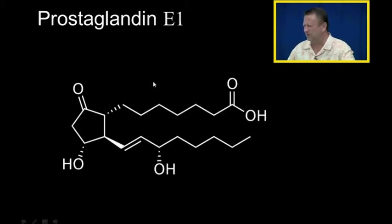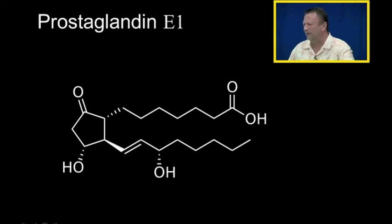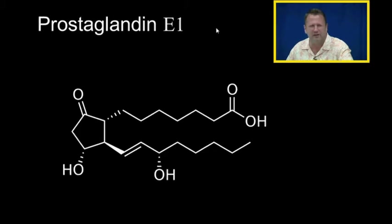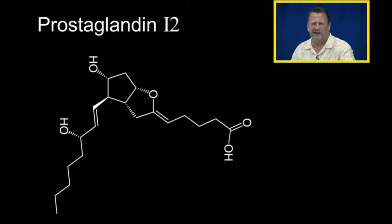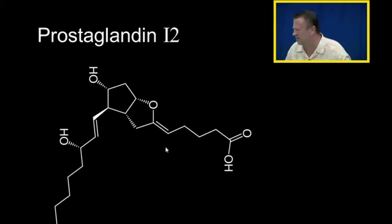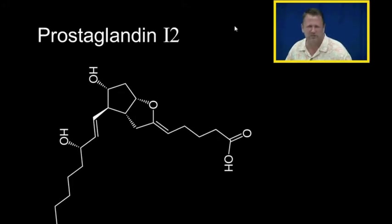Prostaglandin E1: the E indicates where the oxygens are on the ring, determining the letter designation. Notice it has one double bond, hence the number 1. Prostaglandin E2: that ring and its positions give it the letter E, and in the chain there are 2 double bonds — so that's where the 2 comes from.